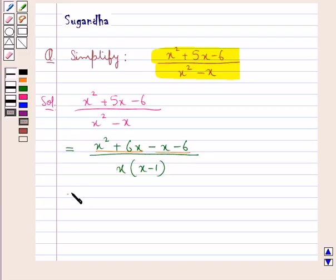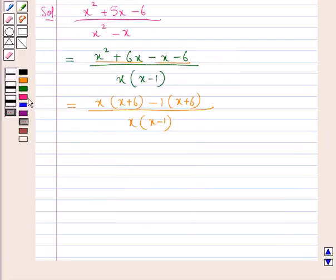Now in the numerator we can write x into x plus 6 minus 1 into x plus 6, and this whole upon x into x minus 1. So further we get the factors of the numerator as x plus 6 into x minus 1 upon x into x minus 1.